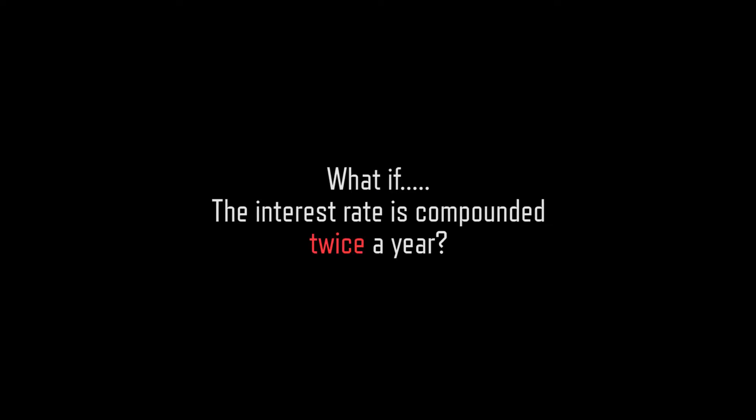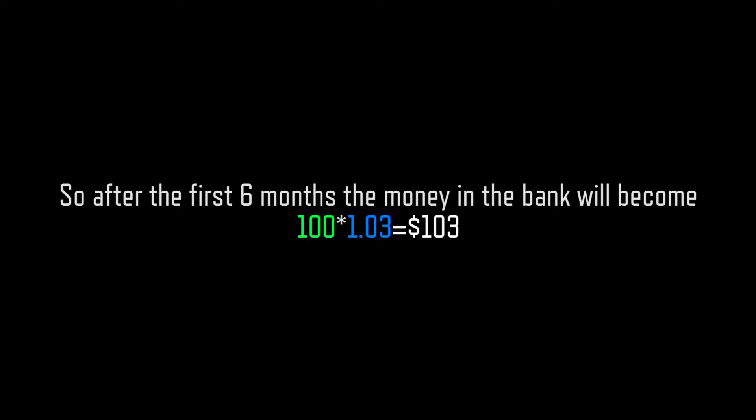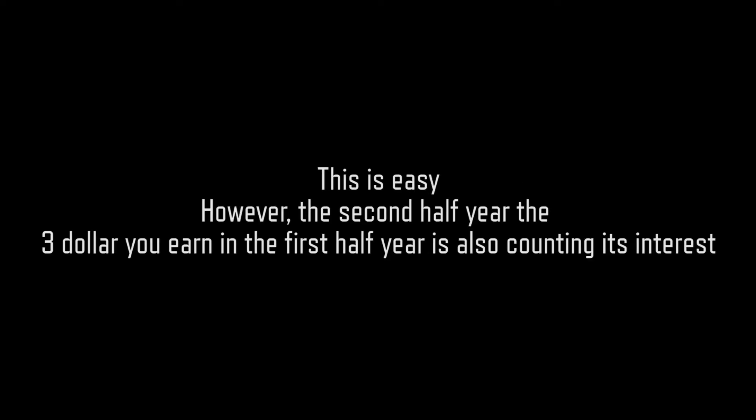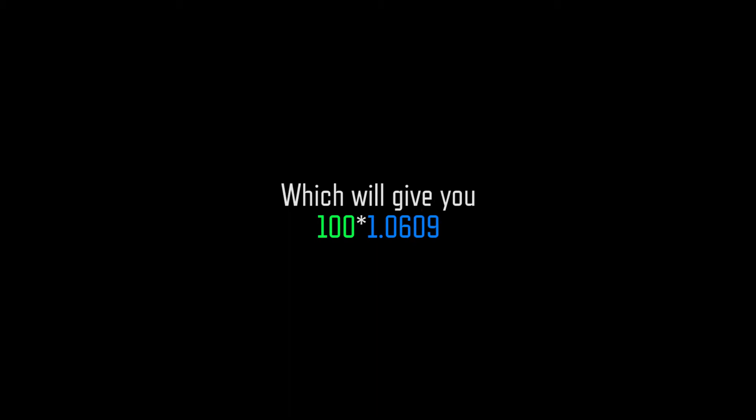What if the interest rate is compounded twice a year? First, we'll have to divide our 6% in half — 3%. So after the first 6 months, the money in the bank will become 100 times 1.03, equals to $103. However, in the second half year, the $3 you earned in the first half year is also counting its interest. So the interest will become 100 times 1.03 times 1.03, which gives you 100 times 1.0609.